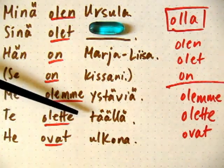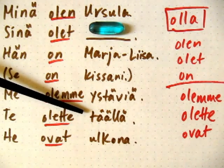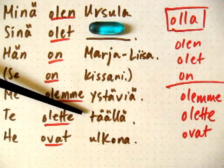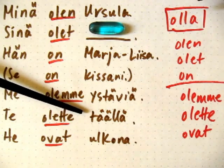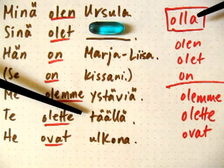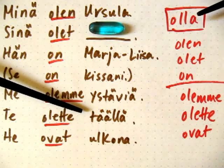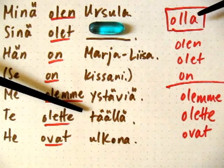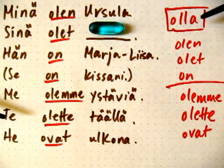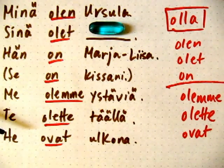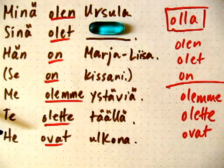Täällä has two a's and also two l's. Just like olla, when I say these two l's, I hang on to that l sound — olla, täällä. Don't let go. Te olette täällä. He ovat ulkona — they are outside.